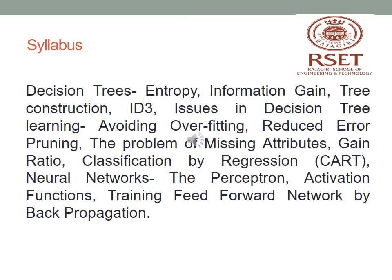In this module, we are going to study what is a decision tree and the different selection measures to construct a decision tree like entropy, information gain, and the different algorithms to construct a decision tree like ID3 and CART. ID3 stands for Iterative Dichotomizer Tree and CART stands for Classification and Regression Tree. We will also cover overfitting, error pruning, missing attributes, and gain ratio.